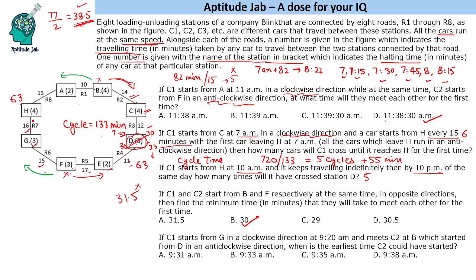The next question says if C1 starts from G in a clockwise direction at 9:20 am and meets C2 at B which started from D in an anti-clockwise direction, when is the earliest time C2 could have started? So car starts from G and then meets C2 at B.